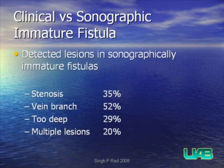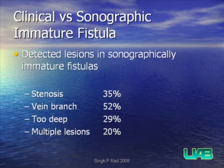What was the variety of abnormalities seen in patients who were both clinically and sonographically immature? Stenosis was present in about a third of patients; nearly half had a competing branch within the first 10 centimeters; and about a third were too deep, which can be helped with superficialization. These numbers do not add up to 100% because some patients had multiple lesions.